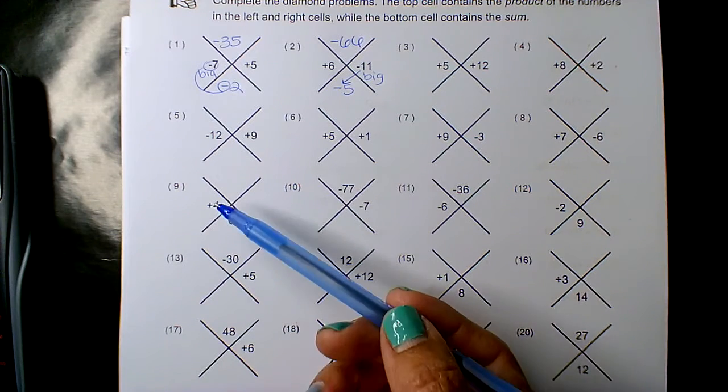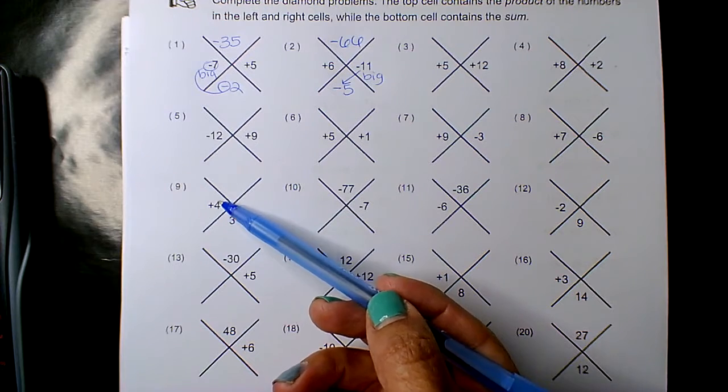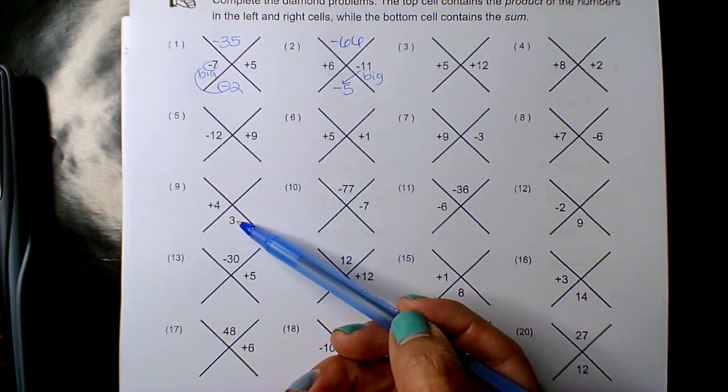Okay, so look, positive 4 combined with some number, an unknown number, gives me the number 3.